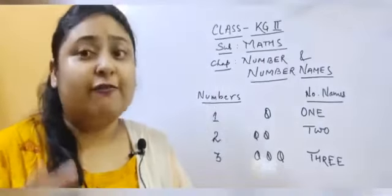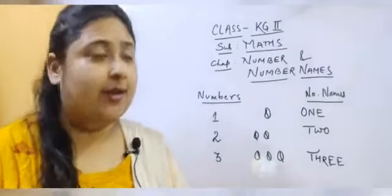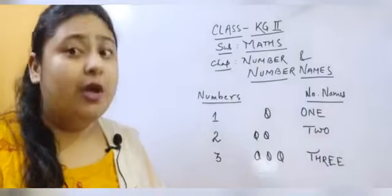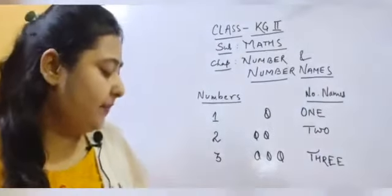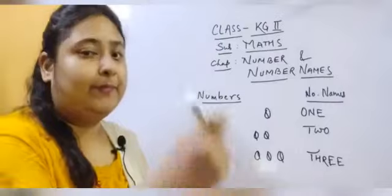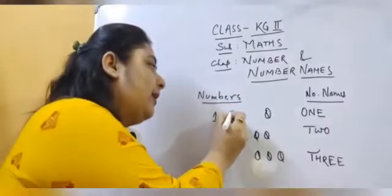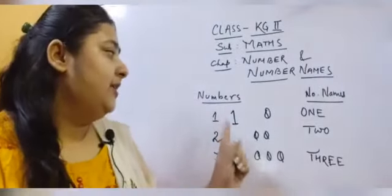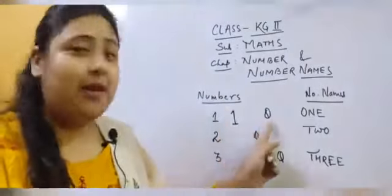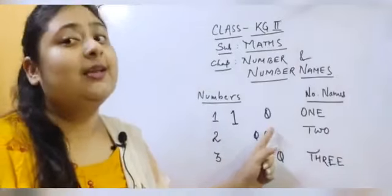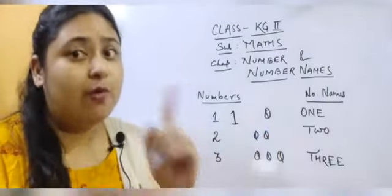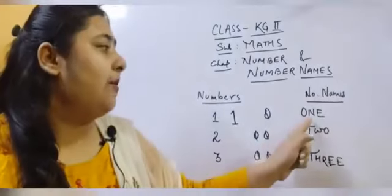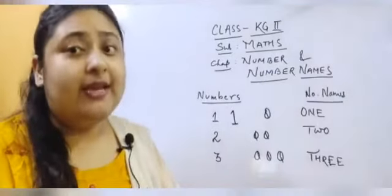So children, our first number is number 1. We write number 1 like this. So this is number 1. How many balls are there, children? There is only one ball. So children, now coming to the number names.